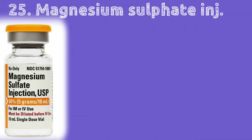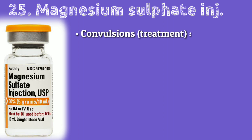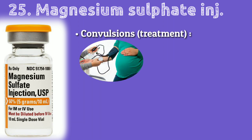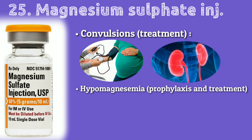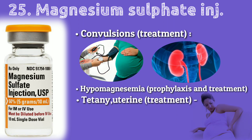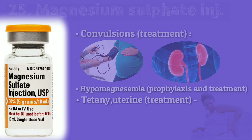Magnesium sulfate is used in life-threatening convulsions in treatment of toxemias, pre-eclampsia, eclampsia, and acute nephritis in children. It is also used for replacement therapy in magnesium deficiency, especially in acute hypomagnesemia. Magnesium sulfate injection is also indicated in uterine tetany as a myometrial relaxant.